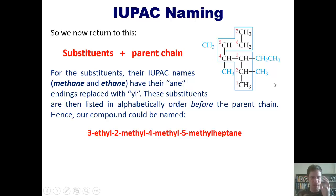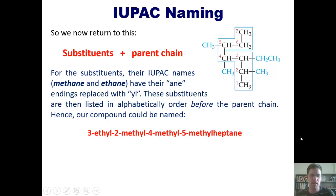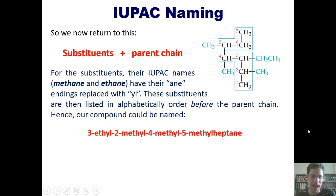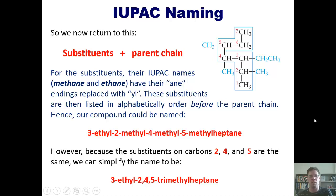I hope that all makes sense. So the substituents have their '-ane' parts of their names replaced with the suffix '-yl'. You'll notice that I put the ethyl group before all the methyls because the letter E comes alphabetically before the letter M. Now, we can make this name a little bit more compact because the substituents found on carbons 2, 4, and 5 are all the same. So we can simplify the name as being 3-ethyl-2,4,5-trimethyl-heptane, indicating that there are three methyl substituents — one attached to carbon 2, one to carbon 4, and one to carbon 5 — and an ethyl attached to carbon 3. That is the full IUPAC-approved name for this molecule.